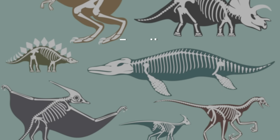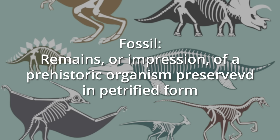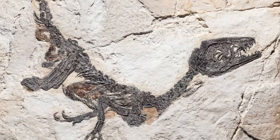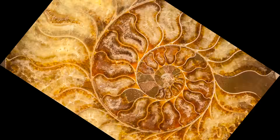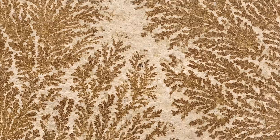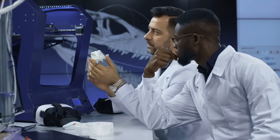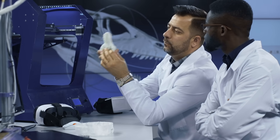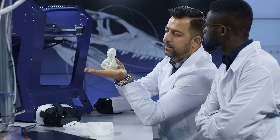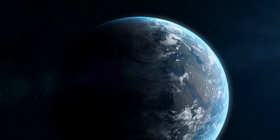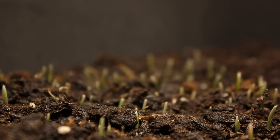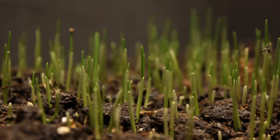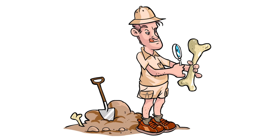A fossil is defined as the remains or impression of a prehistoric organism preserved in petrified form. If you've ever seen a fossil, they're really cool to look at, almost like works of art. But they're also very useful to scientists, who use them to learn about how animals and plants lived a long time ago, about how the Earth has evolved, and about how living matter has changed over time. You can learn a lot from a fossil.